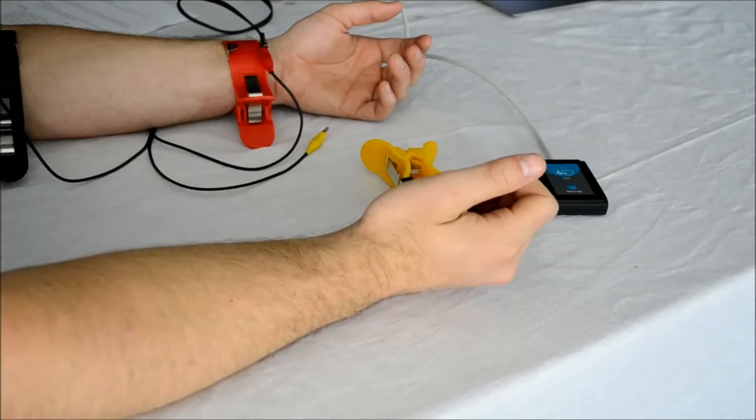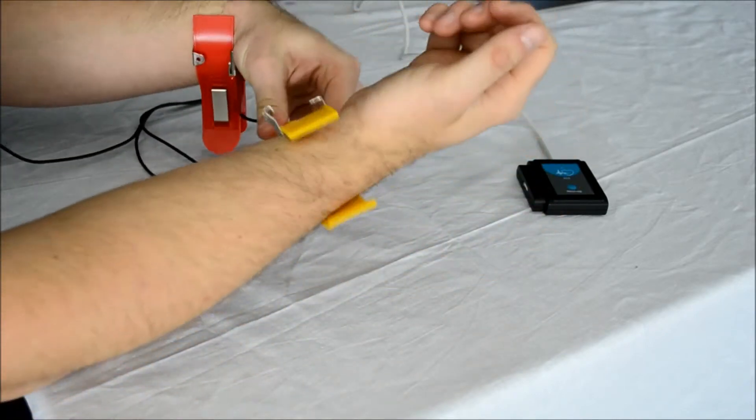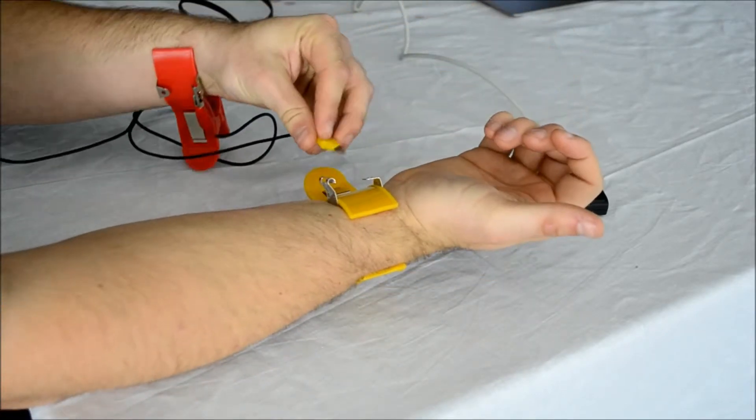To connect to the electrocardiogram sensor, simply connect the clips to your arms or legs and attach the alligator clips to the metal loops.